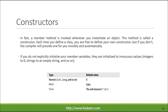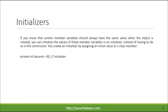If you do not explicitly initialize your member variables, they are initialized to innocuous values: integers to 0, strings to an empty string, and so on. If you know that certain member variables should always have the same value when the object is created, you can initialize the values of these member variables in an initializer, instead of having to do so in the constructor. You create an initializer by assigning an initial value to a class member.